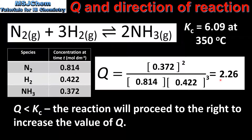If we compare the value of the reaction quotient Q with the equilibrium constant Kc, we can see that Q is less than Kc. Therefore the reaction will proceed to the right to increase the value of Q.